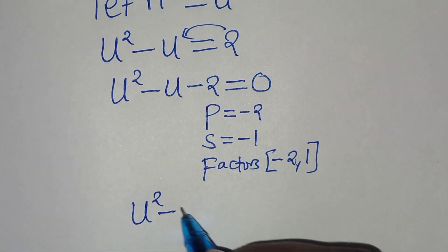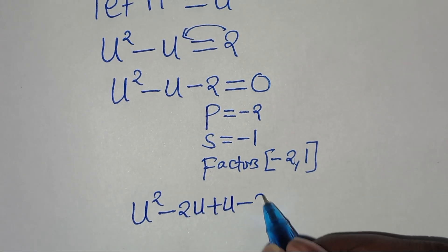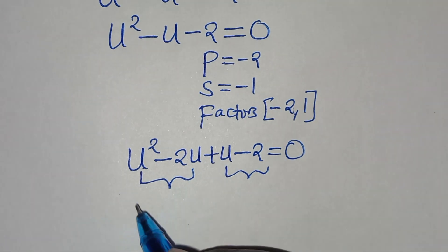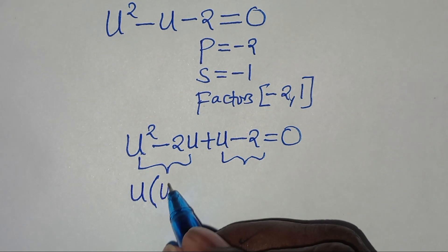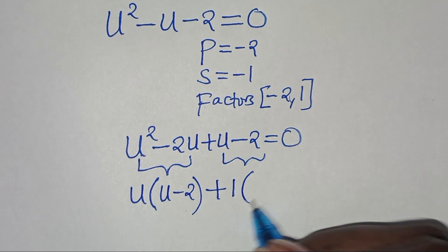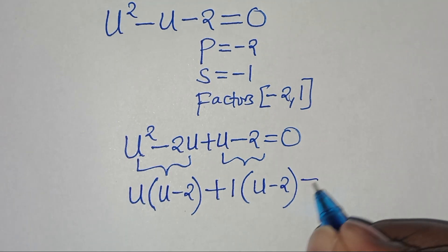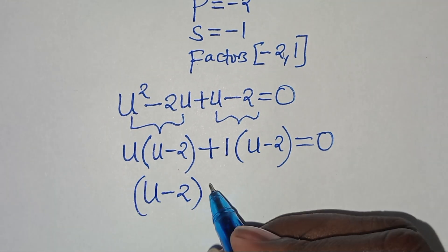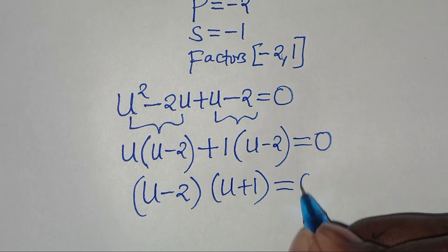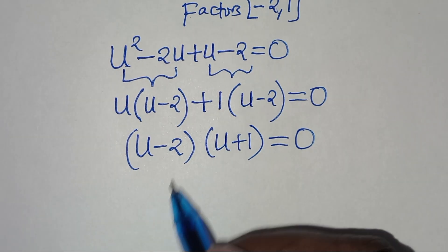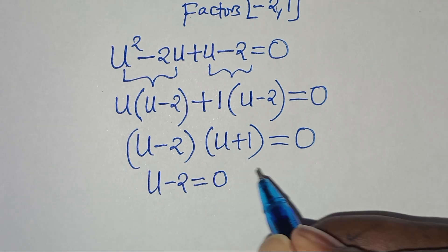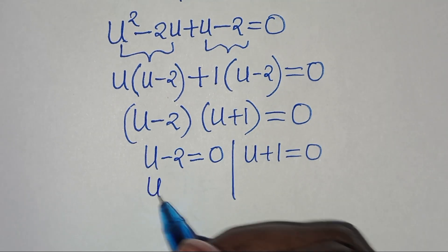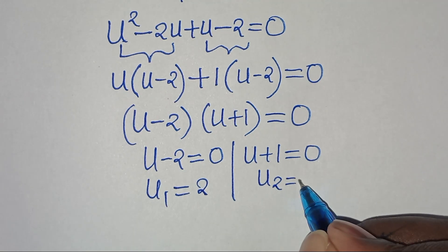So substituting, we have u squared minus 2u plus u minus 2 equals 0. From the first part, u is common so we factor out u to get u(u minus 2), then we remain with (u plus 1). So we have (u minus 2)(u plus 1) equals 0. This means u₁ is equal to 2 and u₂ is equal to minus 1.